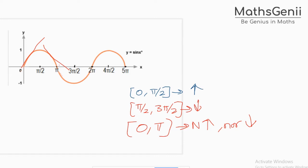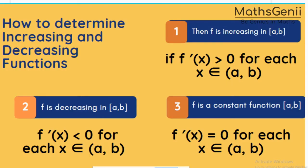In exam questions you cannot always draw graphs, especially with large polynomials. We have another method. Always find the first-order derivative first. A function f is increasing in (a, b) when f'(x) greater than 0. The function is decreasing when f'(x) less than 0. The function is constant when f'(x) equals 0.